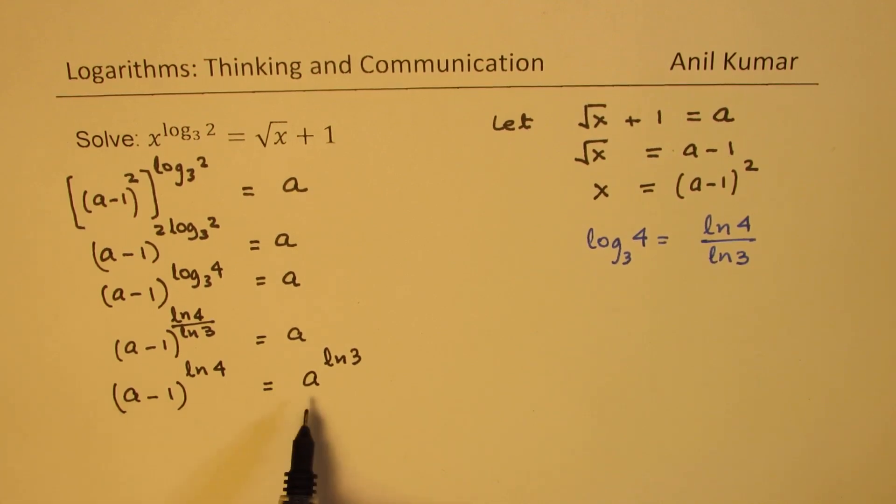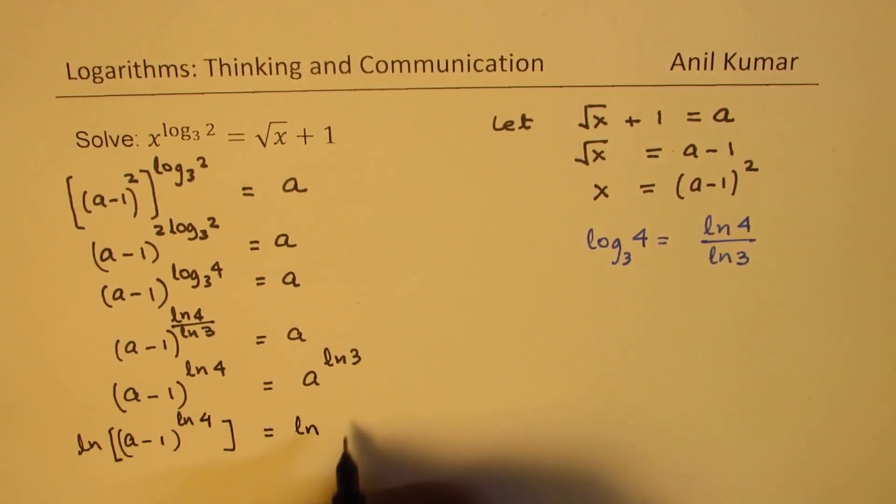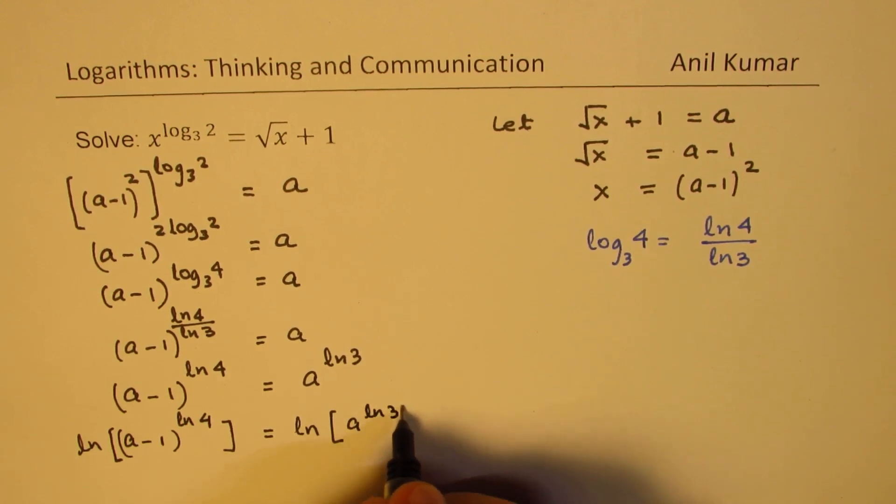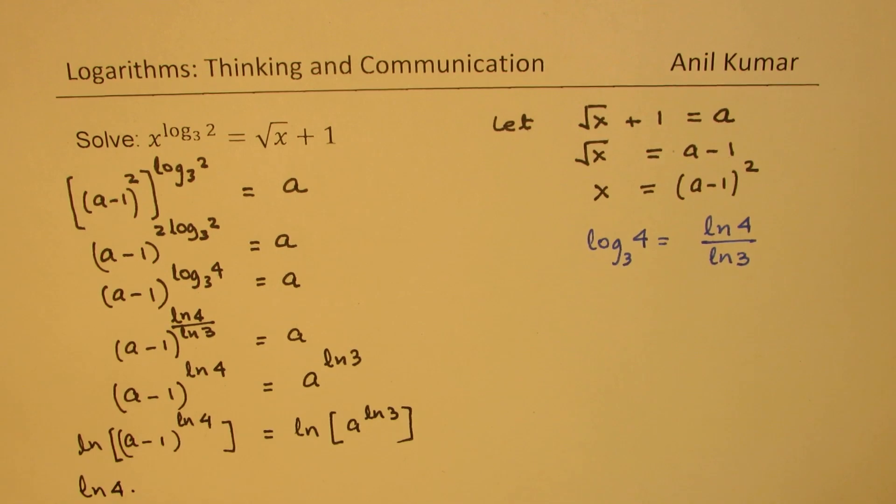Now we can take log on both sides. We'll take natural log on both sides. So we get ln of a minus 1 to the power of ln 4 equals ln of a to the power of ln 3.